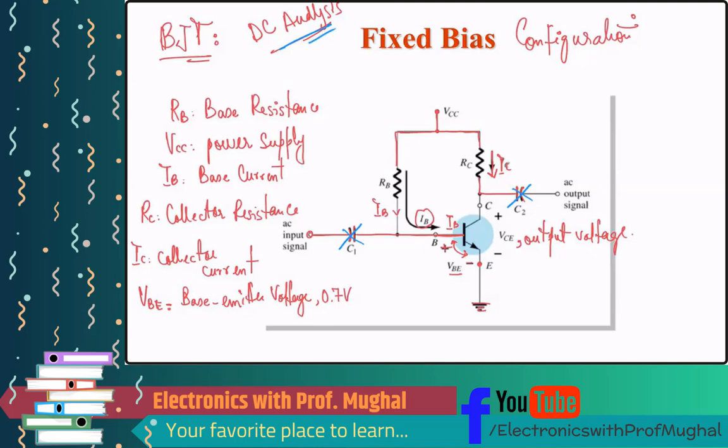This is how fixed bias would look like. If I may ask, we did three kinds of configuration, common emitter, common base, common collector. Which configuration is this? Which of the transistor terminal is connected directly to the ground? E. So this is a common emitter configuration.